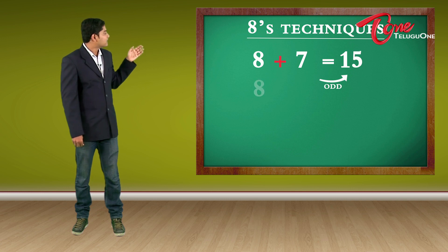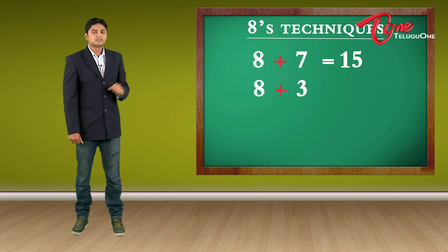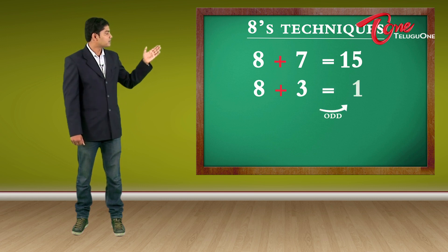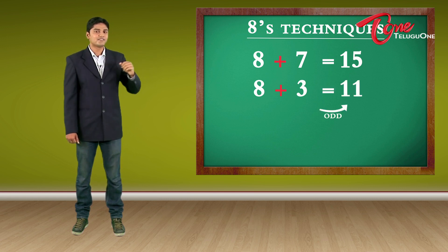And 8 plus 3. 3 is also an odd number. So the before odd number of 3 is 1. So 8 plus 3 is 11.